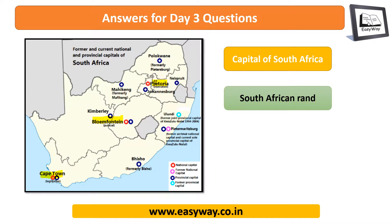Let us discuss the answers for Day 3 questions. The first question was: what is the capital of South Africa? When it comes to South Africa, there are three capital cities. The first is Pretoria, which is the administrative capital — the seat of the President and the Cabinet. Then there is Bloemfontein, which is the judicial capital and seat of the Supreme Court. Then there is Cape Town, which is the legislative capital and seat of the Parliament.